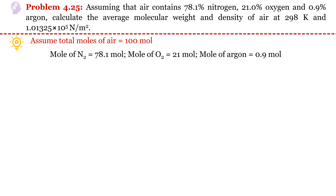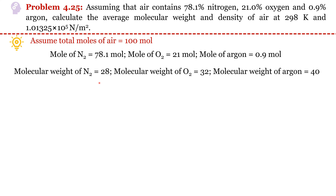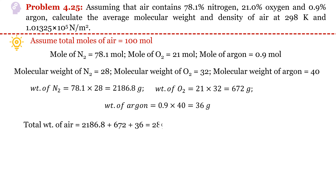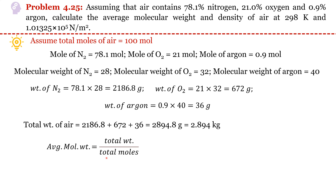After writing the moles of individual components, we estimate their weights. Molecular weight of N₂ is 28, O₂ is 32, and argon is 40. Weight of N₂ equals moles of N₂ times its molecular weight. Similarly weights of oxygen and argon are estimated. Adding all weights gives a total weight of air as 2.894 kg.